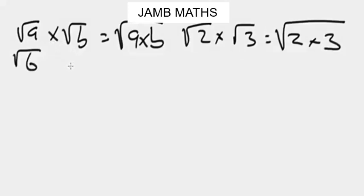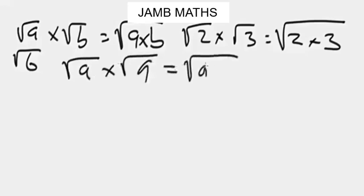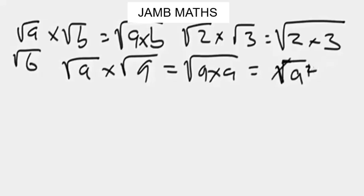Now let's look at another example: square root of a times square root of a. This is the same as square root of a times a, which gives us square root of a squared. Now this square cancels the square root, so our final result will be a. At an advanced level, you enclose it in brackets like this — this square cancels the square root.